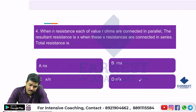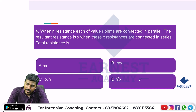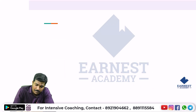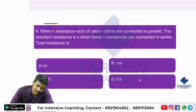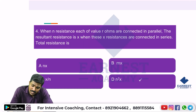Next question: When n resistances, each of value R ohms, are connected in parallel, the effective resistance is R/n. The resultant parallel resistance is X, so R/n = X.